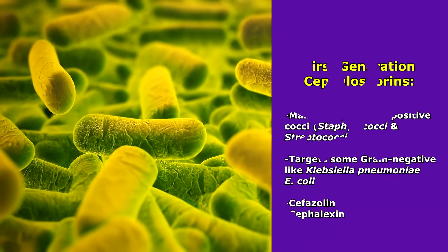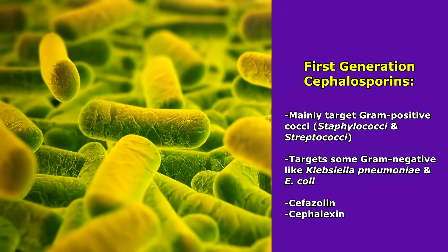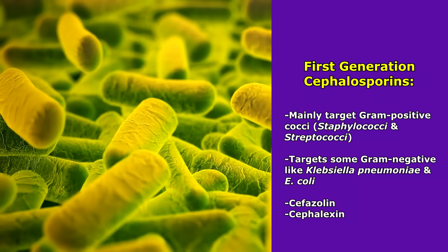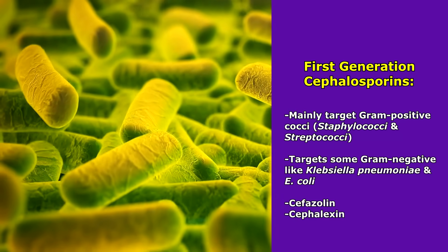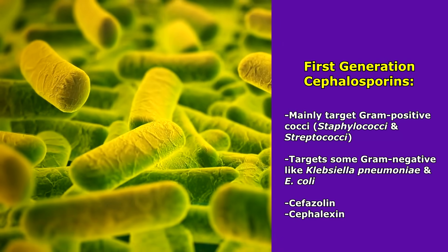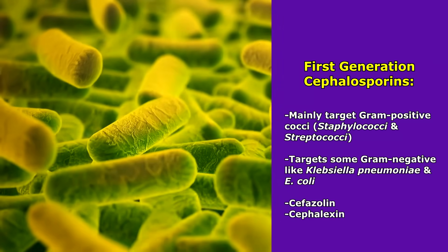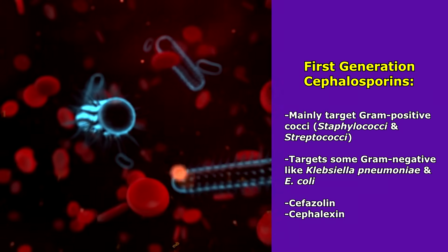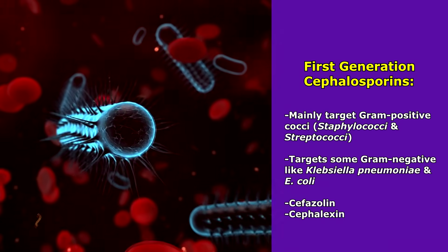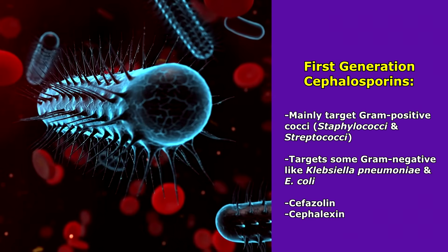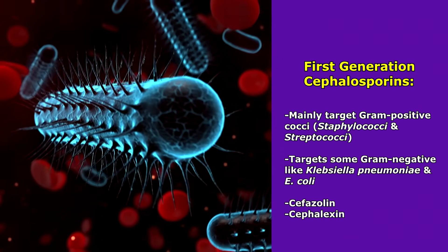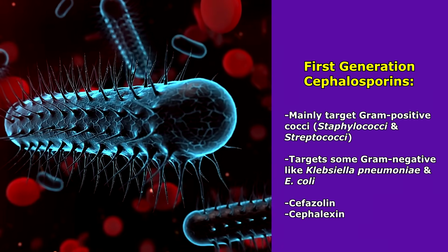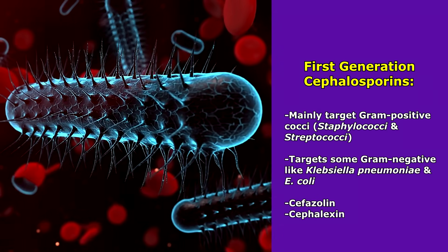First up is the first generation of cephalosporins. This generation mainly targets gram-positive cocci like staphylococci and streptococci. It can also target a few gram-negative bacteria like Klebsiella pneumoniae and E. coli. Some medications in this generation include cefazolin and cephalexin.